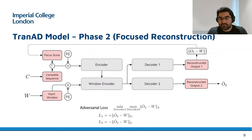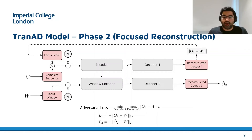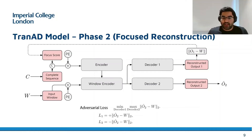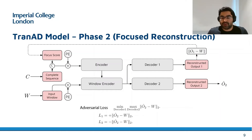This pushes decoder 2 in this phase to generate the same output as O2, which it aims to match to the input in phase 1. So the training objective is as shown here as an adversarial loss. In a sense, decoder 2 wants to say that the focus codes generated by decoder 1 are incorrect.